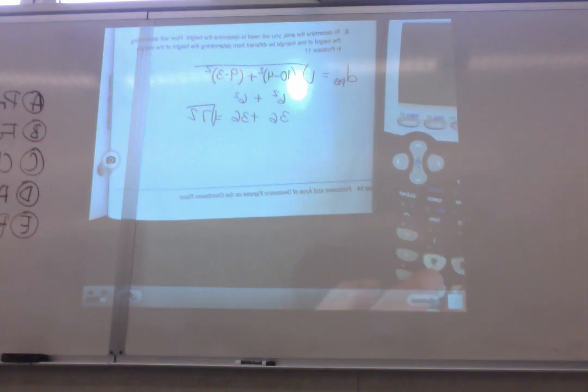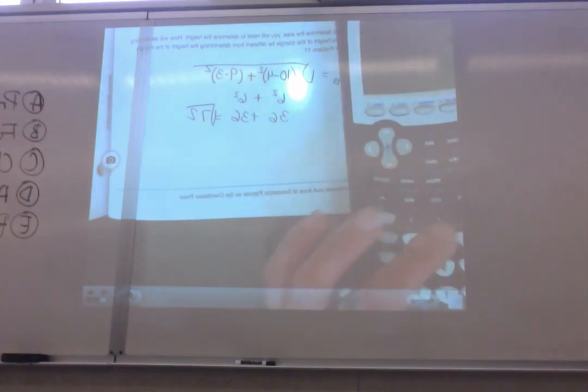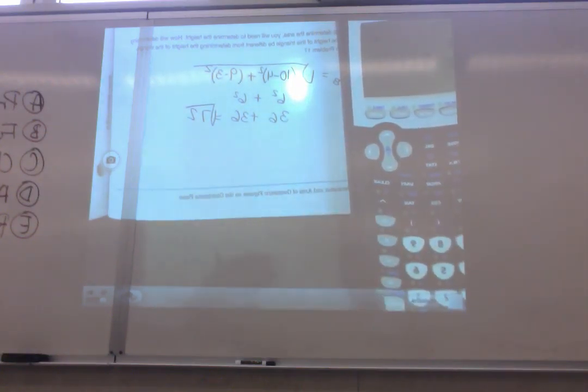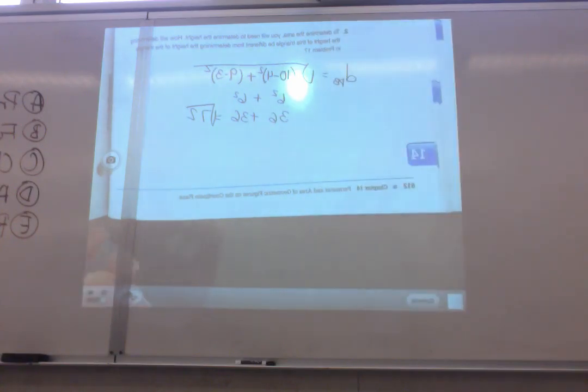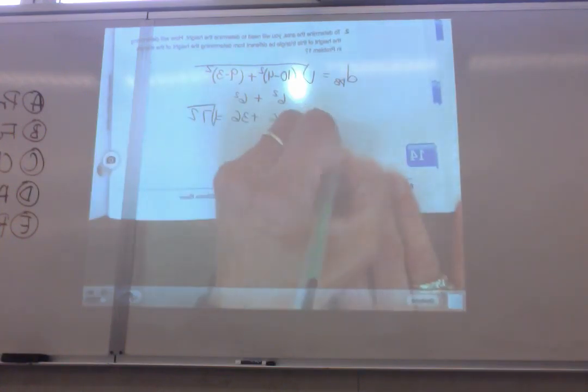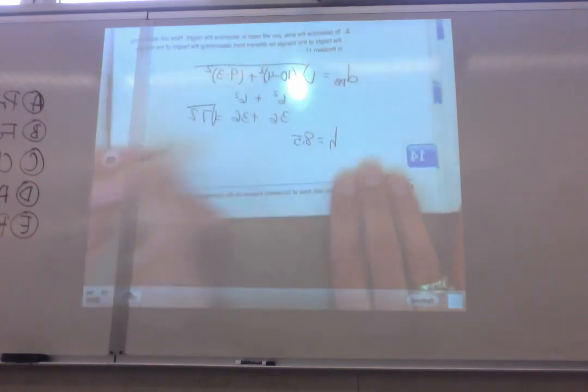Take a square root of 72. Clear. Second square root, 72. 8.5. That looks about right. D, B is the height. Okay?